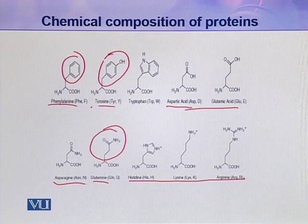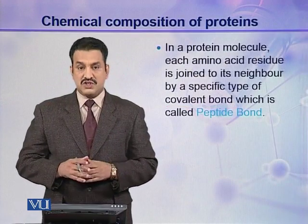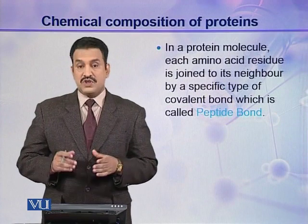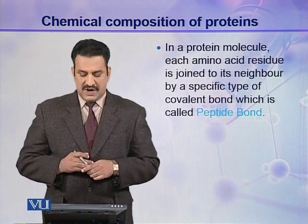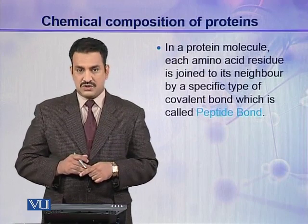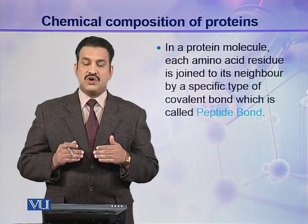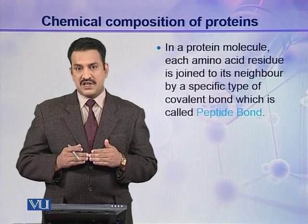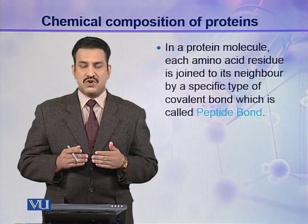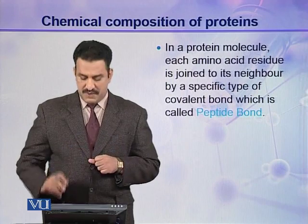So we have now seen all 20 different types of amino acids with their 20 different R groups. In a protein molecule, each amino acid residue is joined to its neighboring amino acid by a specific type of covalent bond called a peptide bond. Two amino acids are joined together through this covalent linkage, which is different from normal covalent linkages and is called a peptide bond.